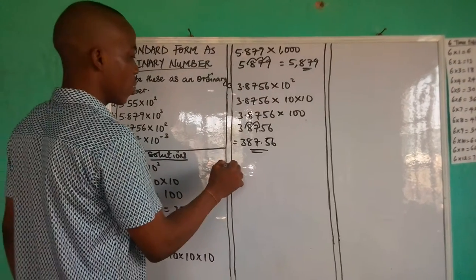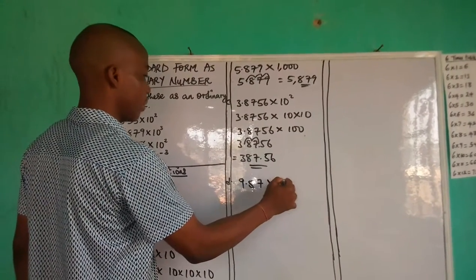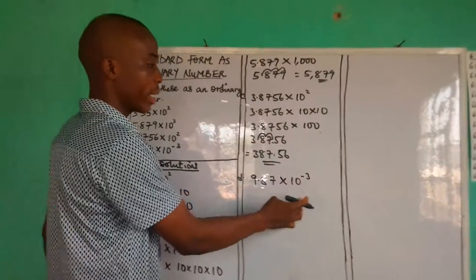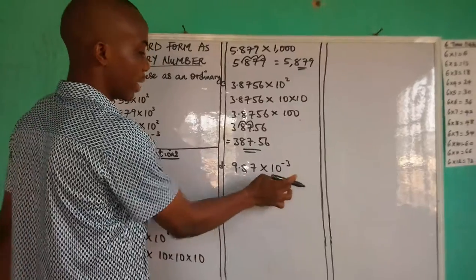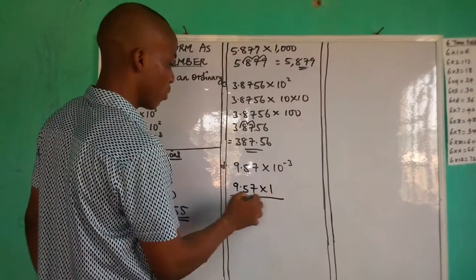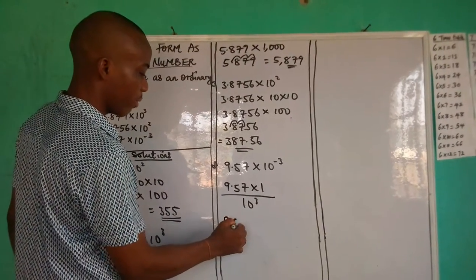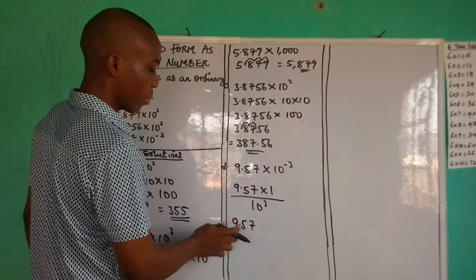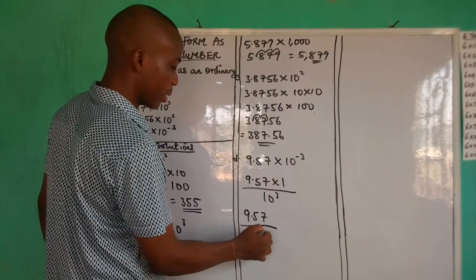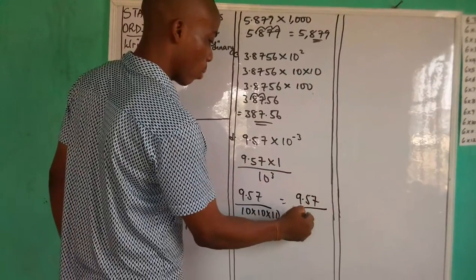Then we go with D. We have 9.57 times 10 raised to the power of minus 3. Now by the law of indices, when you have a negative exponent, it becomes 1 over 10 raised to the power of 3. So we shall have 9.57 times 1 over 10 cubed, giving us 9.57 over 1,000.